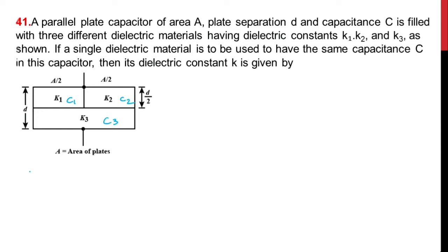First, what is capacitance C1? Using the basic formula when a dielectric is filled: C1 = K1 × ε₀ × A / D. Here the area is half, so A/2, and the distance is also half, D/2. So C1 = K1 × ε₀ × (A/2) / (D/2), and the 2s cancel, giving C1 = K1 × ε₀ × A / D.